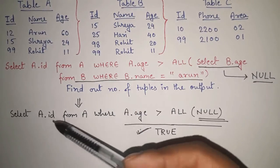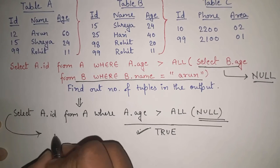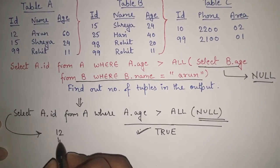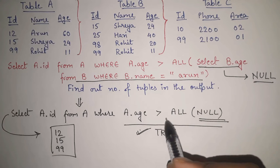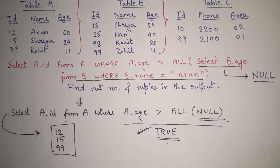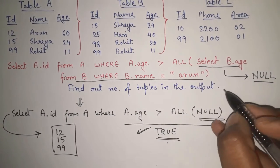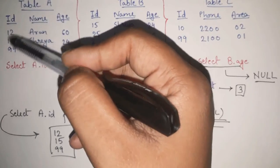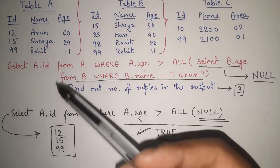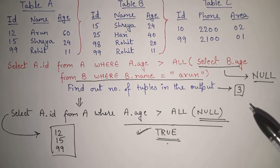Since the condition is TRUE for all rows in table A, all three IDs — 12, 15, and 99 — will be selected. So the output contains all three rows of table A. The number of tuples in the output is 3. If table A had five rows, the output would also have five rows. In this case, we have three rows in A, so the answer is 3.